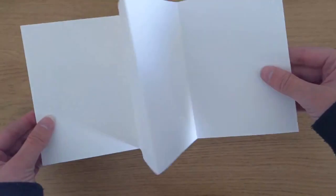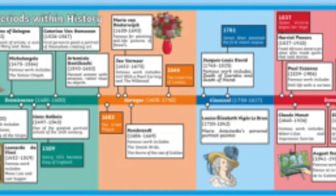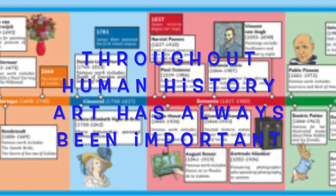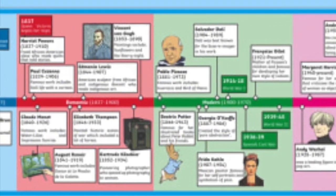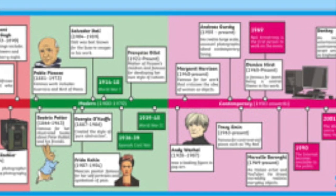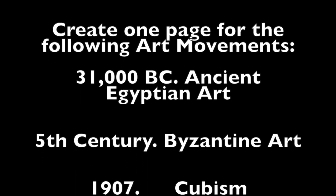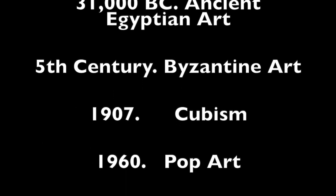You're going to create a drawing in each one of those four sections. Art has changed a lot throughout history. Your booklet is going to show art from four different time periods. We've chosen four different time periods for you. Create one page for the following art movements: Ancient Egyptian art, Byzantine art, Cubism and Pop art.